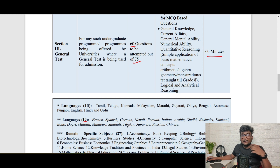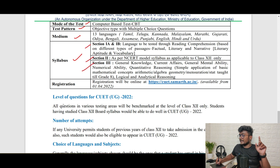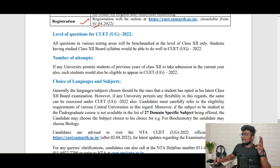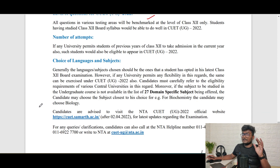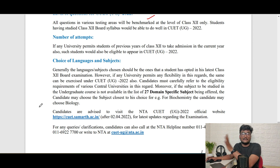You need to give the exam according to the eligibility criteria of your desired universities. The mode of test is computer-based. The medium is 13 languages. The syllabus is up to NCERT Class 12 level. Registration starts from 2nd April. Regarding the number of attempts, it depends on the university. If that university allows droppers, then previous year pass-out students can also write CUET and submit the score. It's up to each university's rules and regulations.